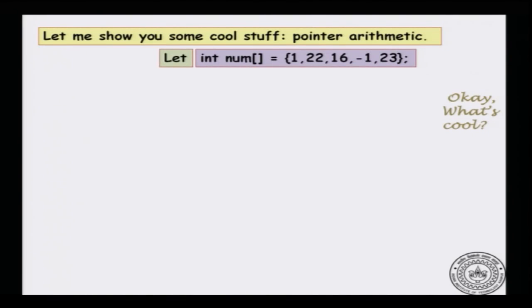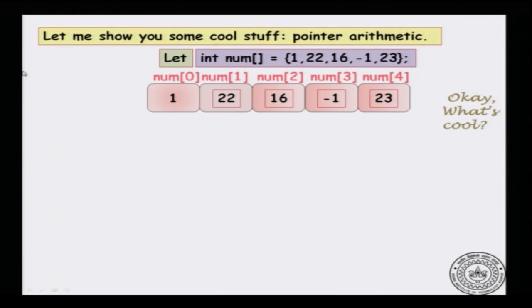Let us consider an array declared as follows: int num with five numbers in the initialization list. The array will be initialized as five consecutive integer locations in memory with the given elements, plus a sixth cell which points to the first location in the array.